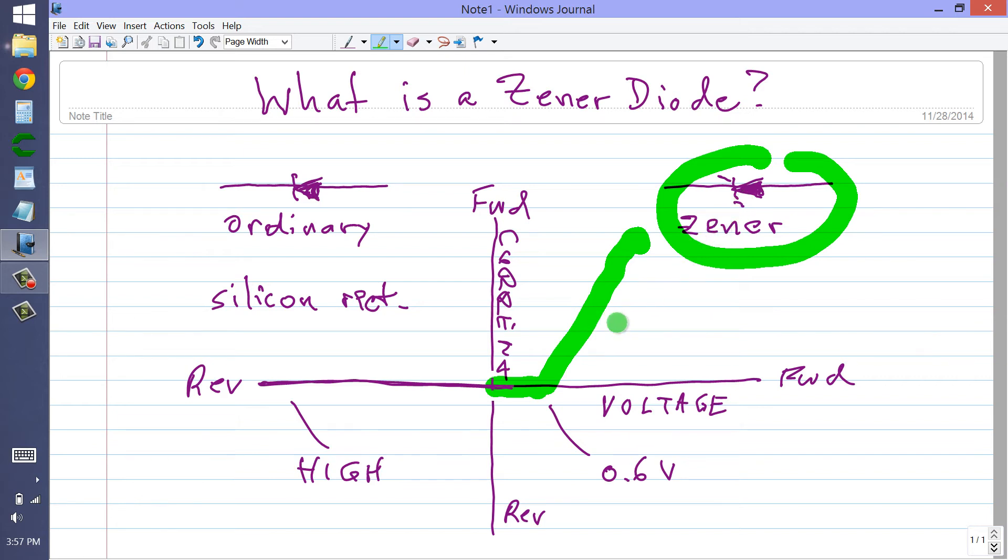And in fact, in the forward direction, a Zener diode behaves pretty much the same way as an ordinary diode does.